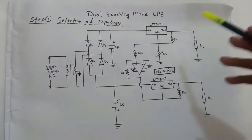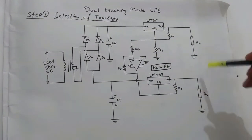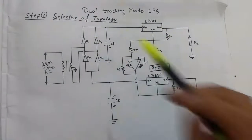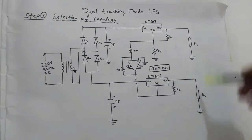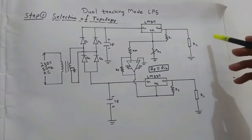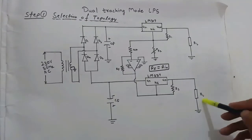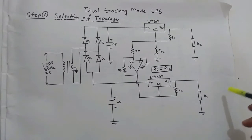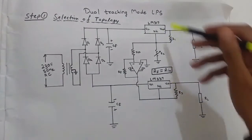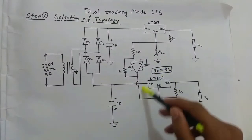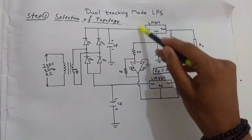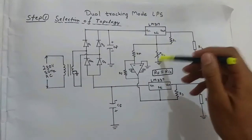The first step in designing linear power supplies is selection of topology. These are the loads: one for +5 V to +10 V and one for −5 V to −10 V. These two are the regulator ICs — one for negative regulation and one for positive regulation.